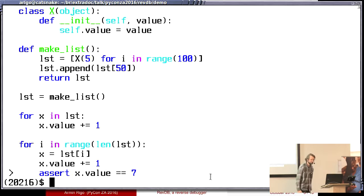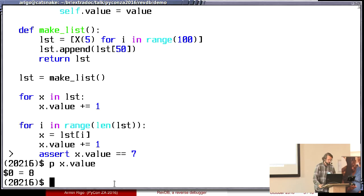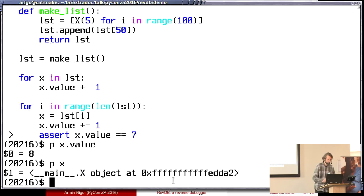Now let me introduce reverse debugger. I'm here. Right? I am going to enter commands that look familiar if you're using pdb, for example. I'm printing x.value and it says it is 8. It also says $0 here. Why $0? Because if I print another value, like x, this is now $1, etc. This should be familiar if you're using gdb. It just means the second, the third printed value.